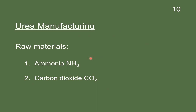In urea manufacturing, the following raw materials are required. Number one, ammonia, with formula NH3, and number two, carbon dioxide, with formula CO2.